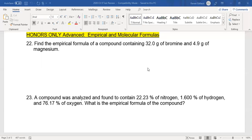Hello, honors. All right, we're going to go over the rest of this worksheet for you so that you can work on finding empirical formulas and molecular formulas. Find the empirical formula of a compound containing 32 grams of bromine and 4.9 grams of magnesium.